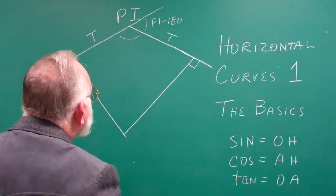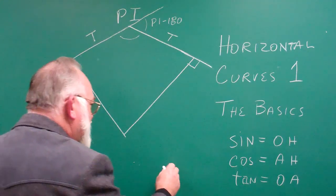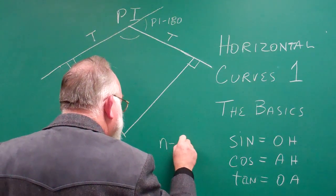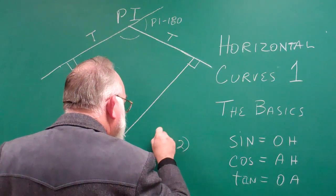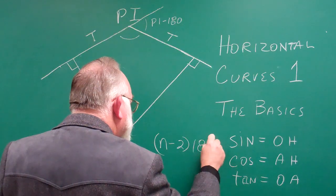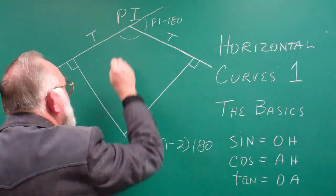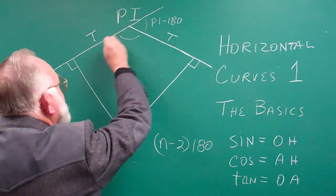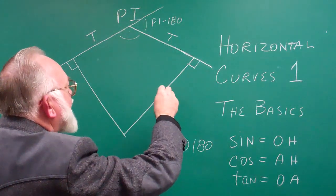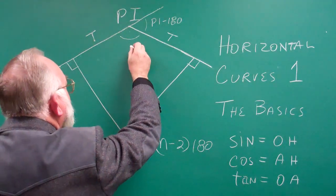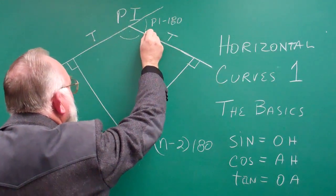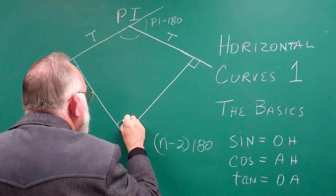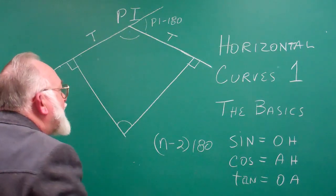You know from previous work that the sum of the angles of any four-sided figure is n minus 2 times 180, which means that the sum of these two angles has to be 180 degrees. Because this is a straight line being intersected by this line, you know that whatever this angle is, that angle added to it equals 180. So that makes that angle the same as this angle.